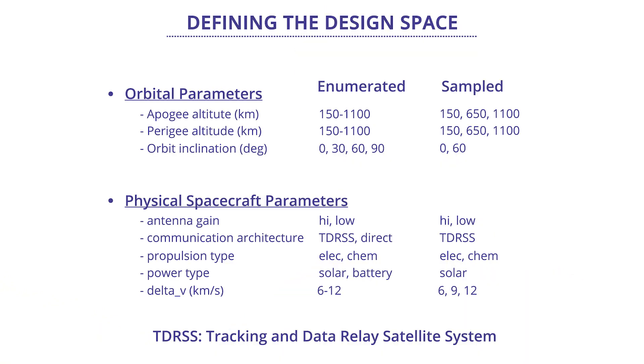These are specifying the range across which our orbital dynamics model needs to be able to evaluate our alternatives. From the enumerated range, we sample a subset: three particular levels for each of our altitudes — 150, 650, and 1,100 kilometers — and two particular levels for our orbital inclination, 0 degrees and 60 degrees.